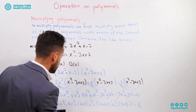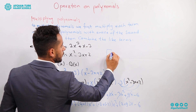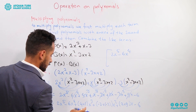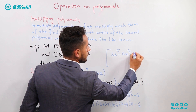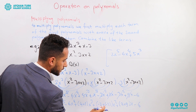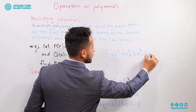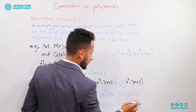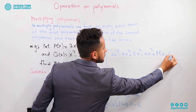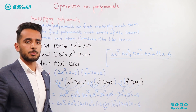The constant term negative 6 stands alone. So the final answer is 2x⁵ minus 6x⁴ plus 5x³ minus 6x² plus 11x minus 6. This is the answer for the multiplication of these two polynomials.